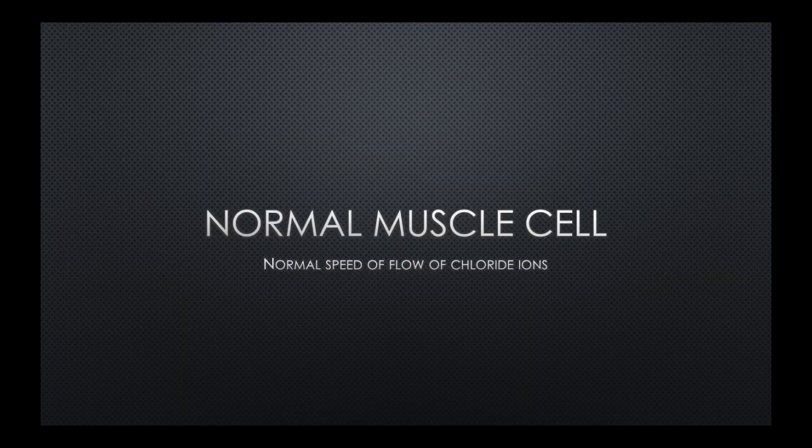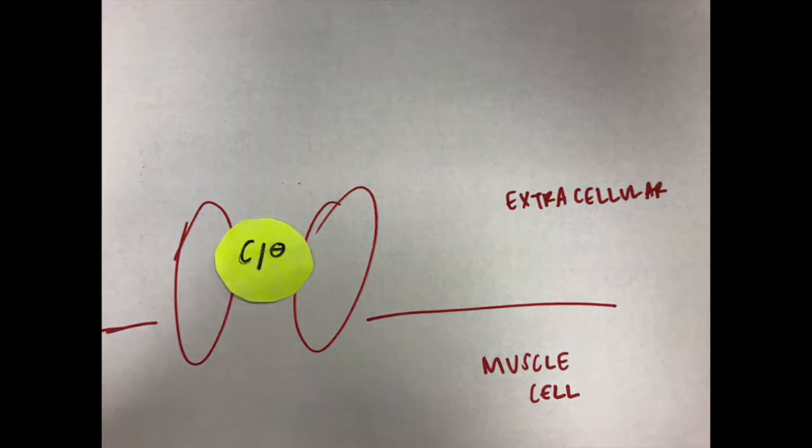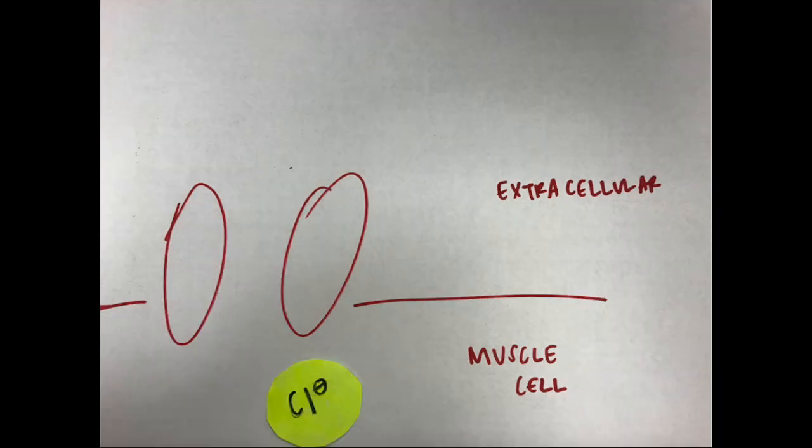In a normal skeletal muscle, one type of ion called chloride flows quickly into the muscle cell, preventing accidental muscle contraction and helping the muscle to relax after a contraction.